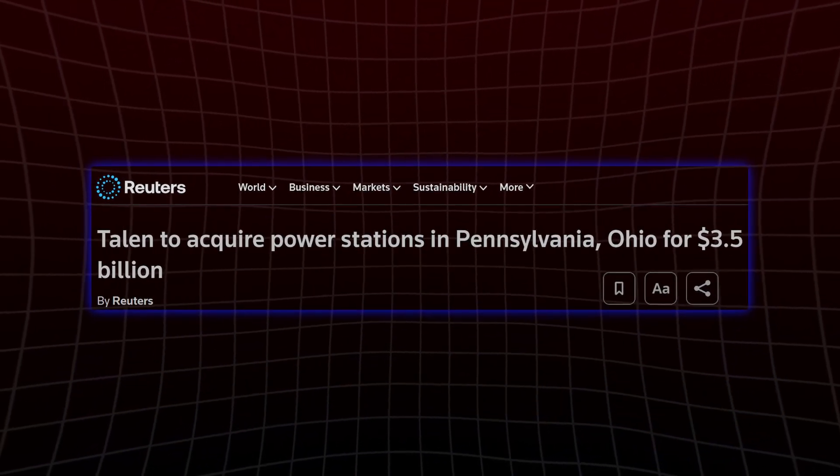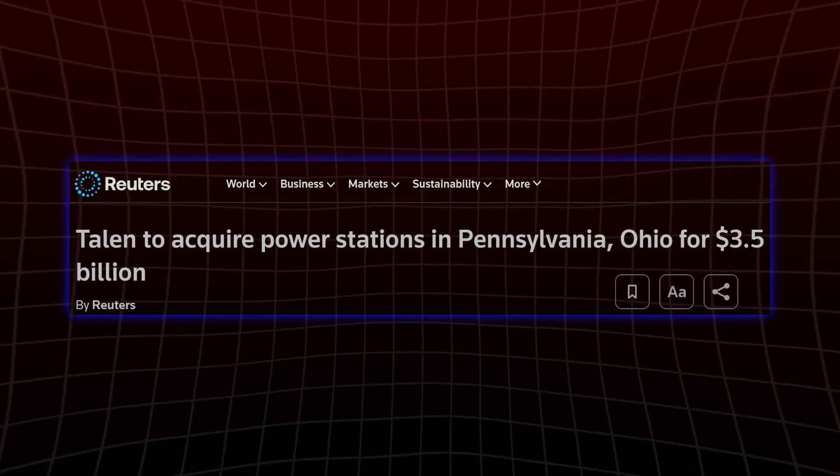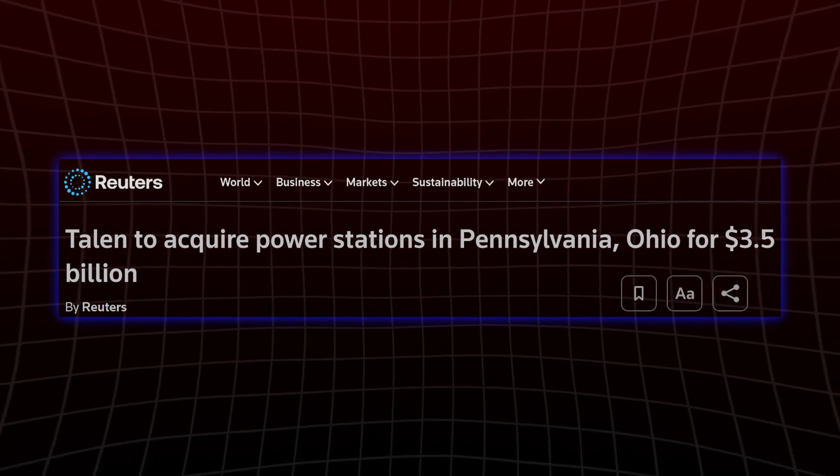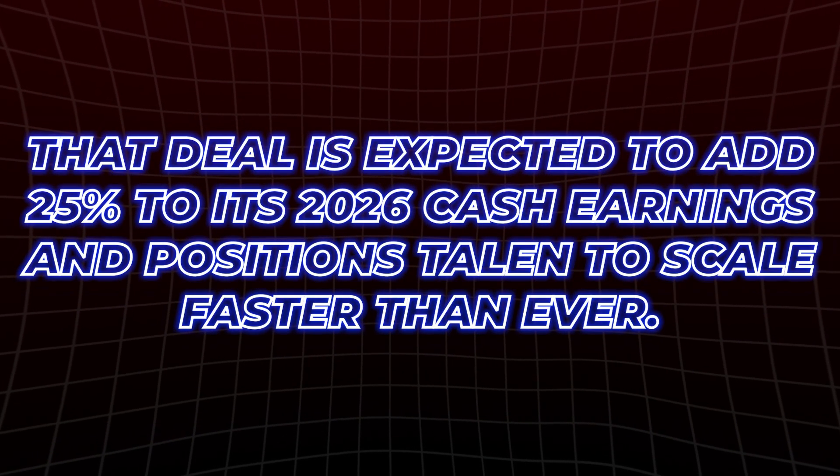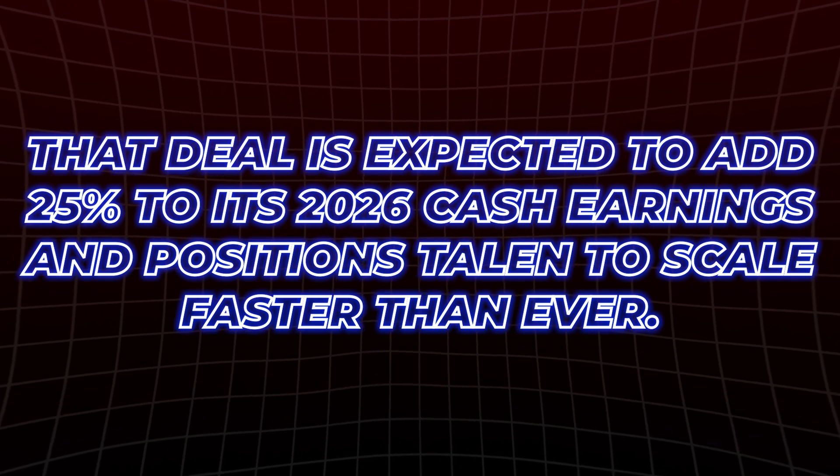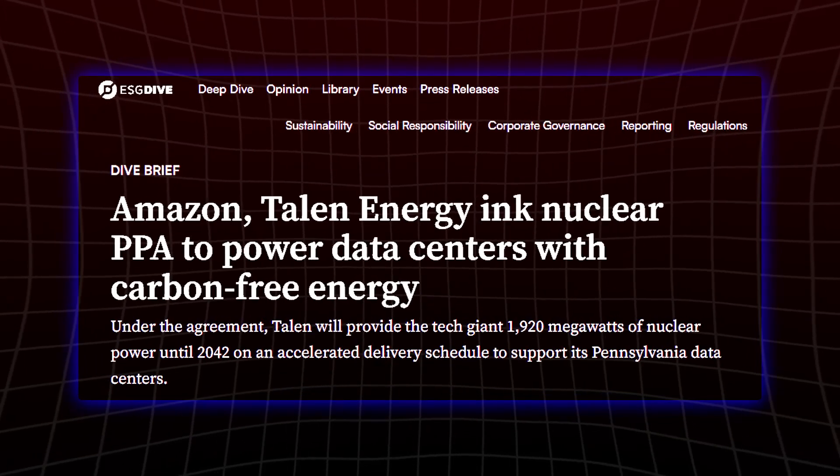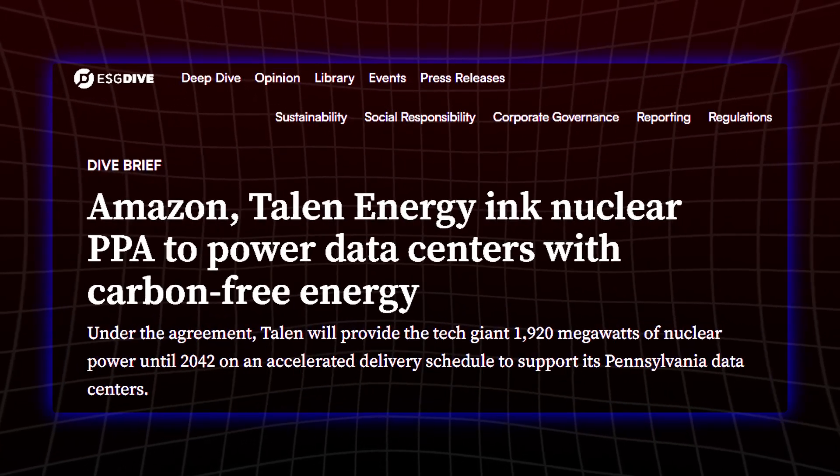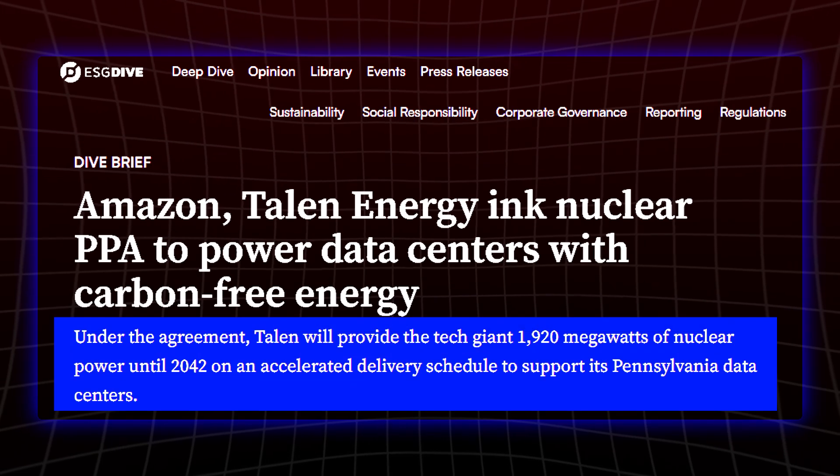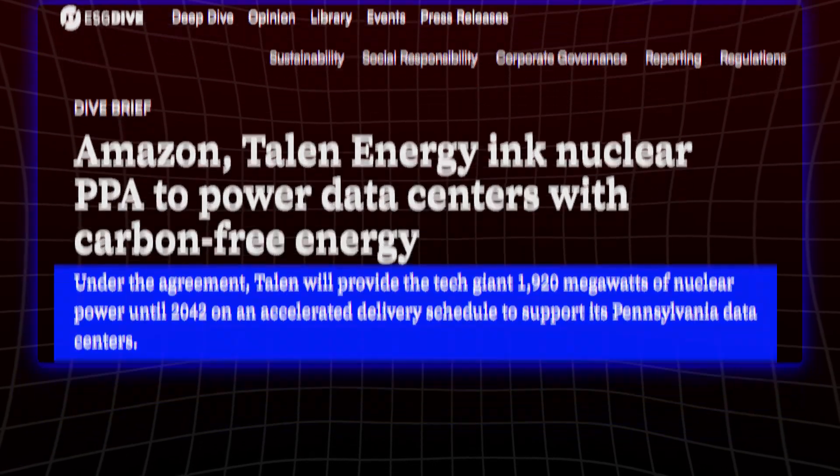Recently, Talon made a game-changing move with its acquisition of two natural gas-fired power plants in Ohio and Pennsylvania, boosting its capacity by 33%. That deal is expected to add 25% to its 2026 cash earnings and positions Talon to scale faster than ever. In parallel, Talon also expanded its power purchase agreement with Amazon, doubling the capacity from 960 megawatts to 1920 megawatts through 2032.